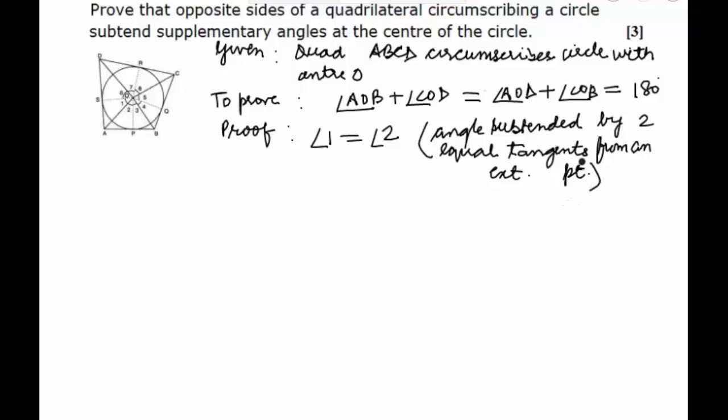A similar reason can be given for all the other angles. We will also get that angle 3 is equal to angle 4 because they are subtended by the tangents BP and BQ. Similarly, we will get angle 5 equal to angle 6 for tangents coming from C, and angle 7 is equal to angle 8.